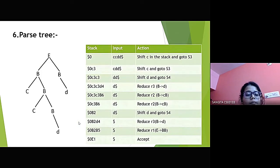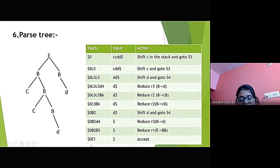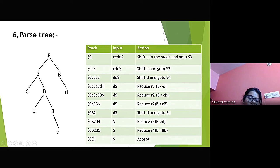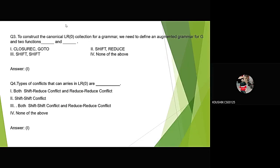The last part is making the parse tree from the stack table. E produces two Bs. One B produces D, and another B produces C and B. That B in turn produces C and B, and the inner B becomes D. The grammar CCDD is produced and the parse tree is complete.